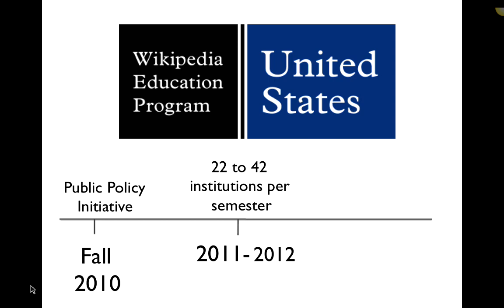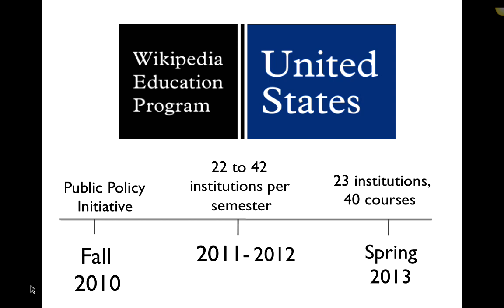We were part of the spring 2012 iteration of this program. Institutions ranged from community colleges to four-year schools, state schools, private schools — a really wide range of colleges. In the second semester, there were 23 campuses with some sort of Wikipedia assignment, representing 40 courses. We chose to join the education program because we liked the idea of having a Wikipedia ambassador, getting materials and training.